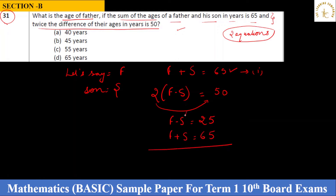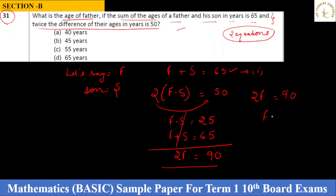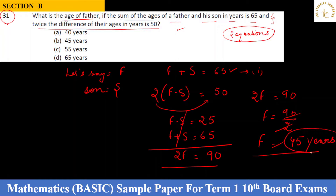Eliminating S: F + S = 65 and F − S = 25. Adding both equations, the S terms cancel out. We get 2F = 90, so F = 90 ÷ 2 = 45. Father's age is 45 years.